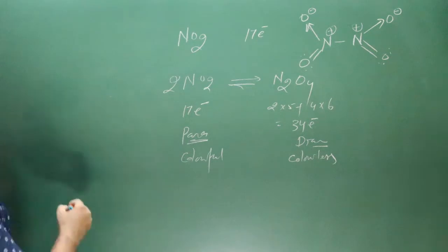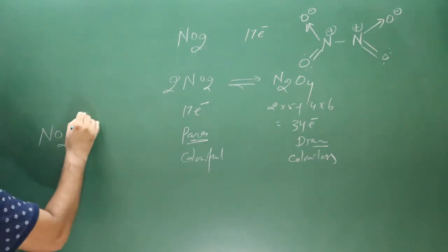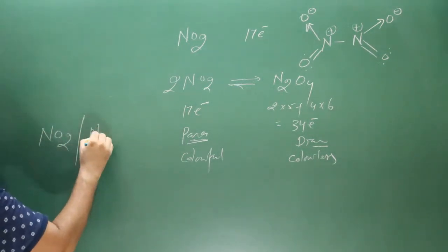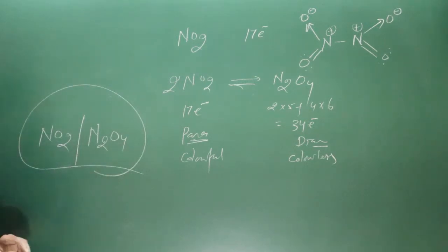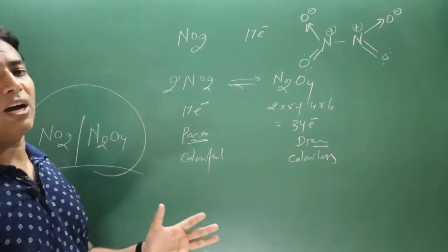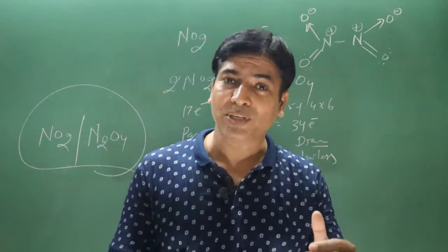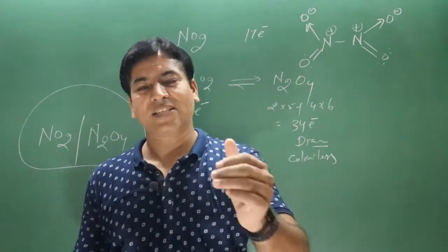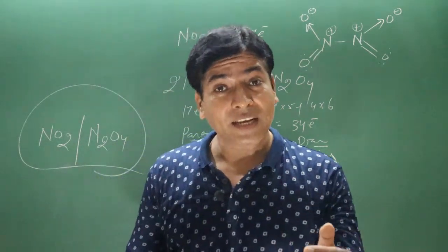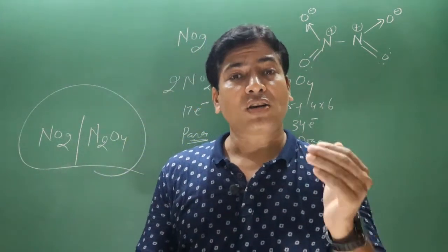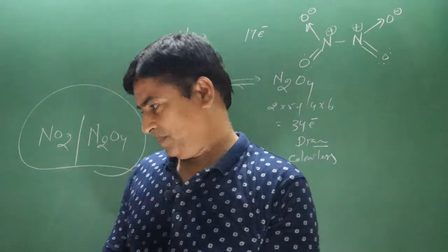Both nitrogen dioxide and dinitrogen tetraoxide have a good number of oxygen atoms, so they act as better oxidizing agents. Now let's discuss the chemical reactions of nitrogen dioxide.